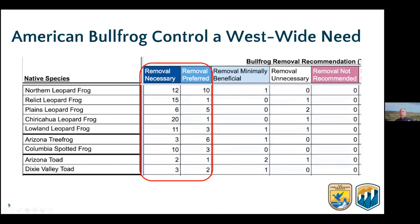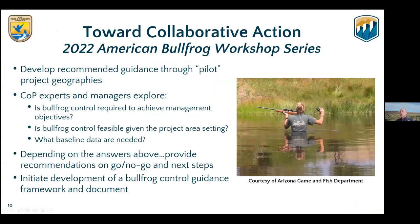During last year's workshop, we went through a series of questions on how important bullfrog control was for conservation of species in need. We walked through about 26 species, and removal was necessary or preferred for almost all of them. There was never a case where removal was not recommended. This has been a powerful communication piece when talking to regional leadership about how significant the bullfrog control issue is.